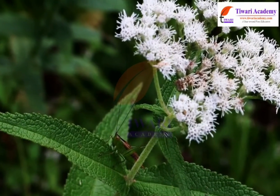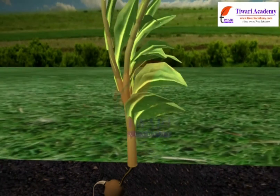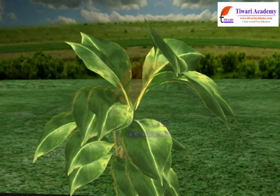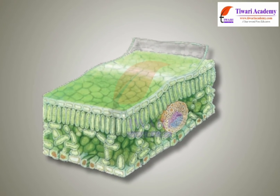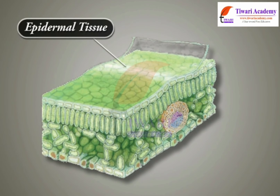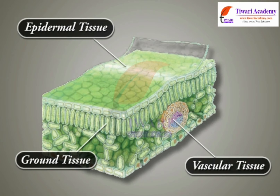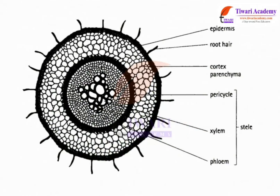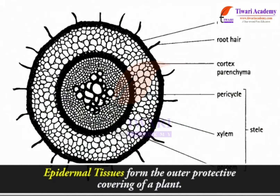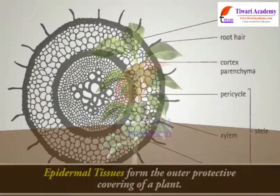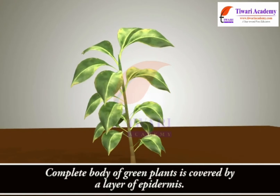Plants are autotrophic and their growth is limited to certain regions. Plants have basically three layers of tissues: epidermal tissue, ground tissue, and vascular tissue. Epidermal tissues form the outer protective covering of a plant — the complete body of a green plant is covered by a layer of epidermis.